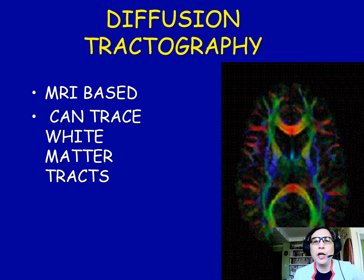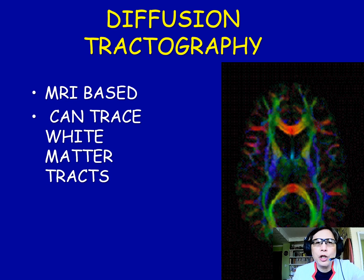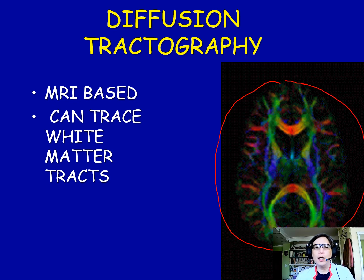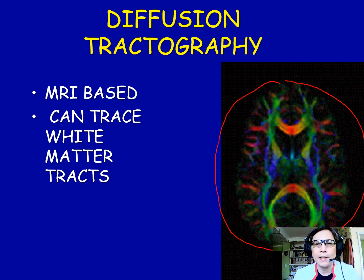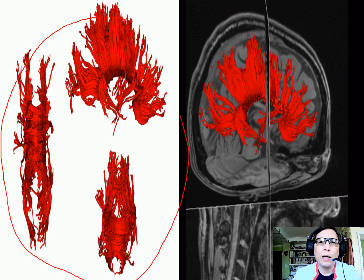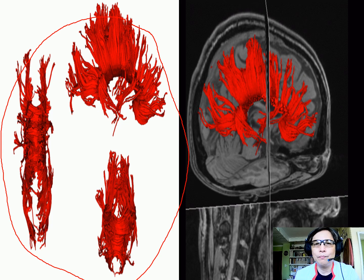This MRI application that can look at the white matter tracts is called diffusion tractography. Diffusion tractography, which is MRI-based, can trace the white matter tracts. What you see here is the corpus callosum as visualized by diffusion tractography — and that is how it looks.